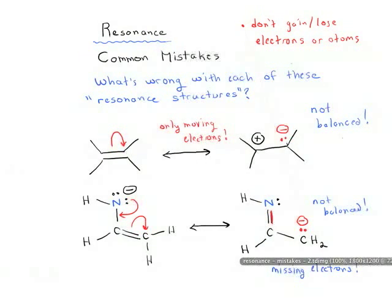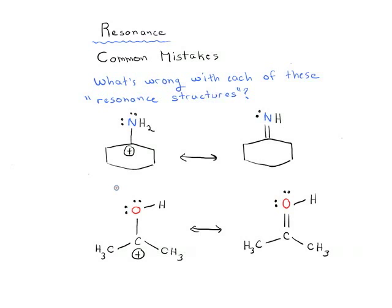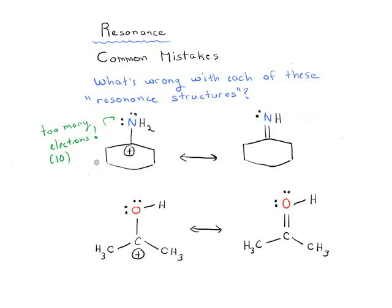Let's look at another example. What's wrong with these resonance structures? Again, press pause and look at them yourself; when you're ready, press play and we'll go through them. There are actually a couple of things wrong with this resonance structure on the left and the one on the right. Hopefully you'll see that we've got too many electrons around our nitrogen — there are too many electrons. Notice we've got 10; that's not legal.